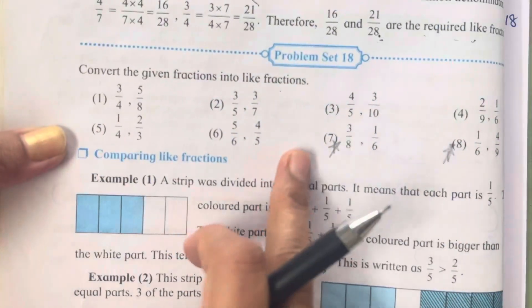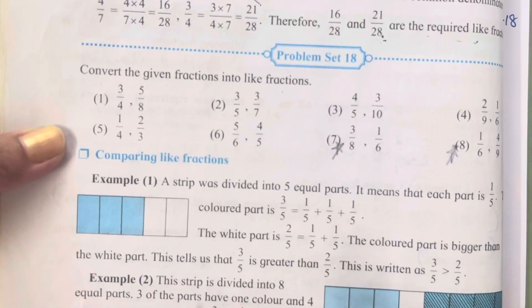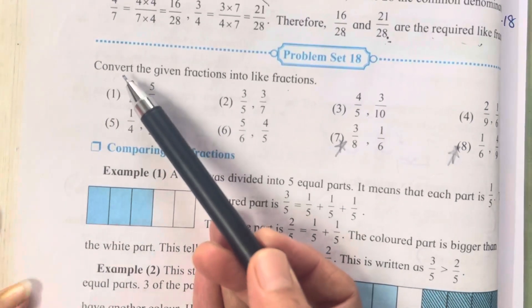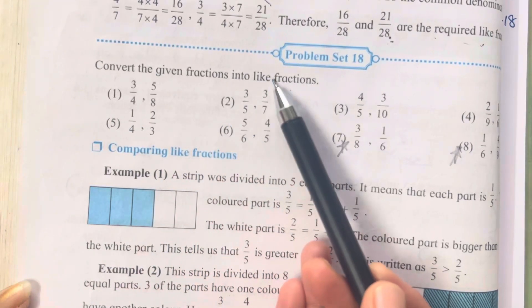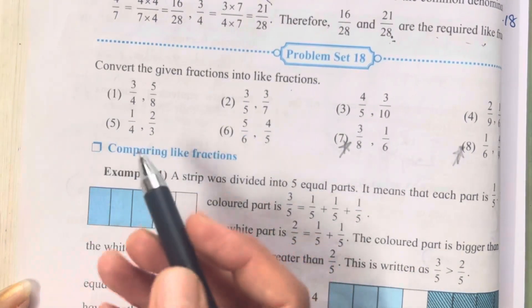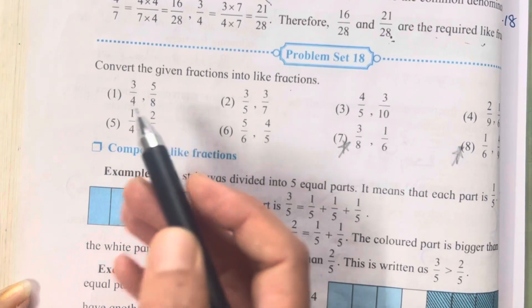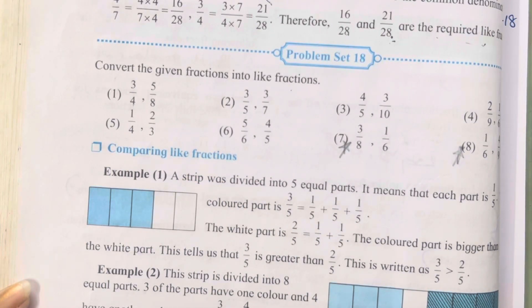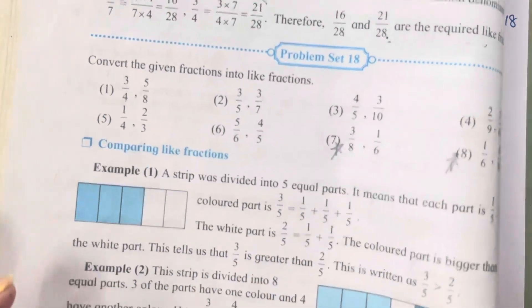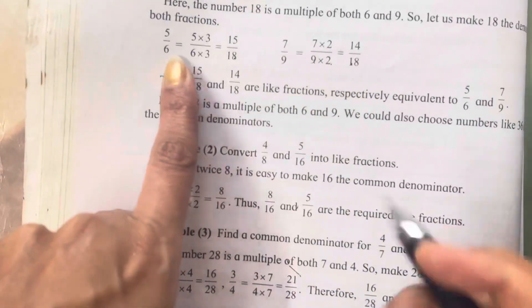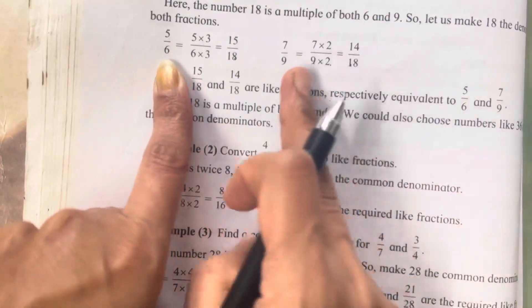So this is the exercise that we are going to complete in today's video. The question says convert the given fractions into like fractions. Like fractions means both the denominators should have the same number or same value. Now few examples have been given over here. See 5 upon 6 and 7 upon 9.